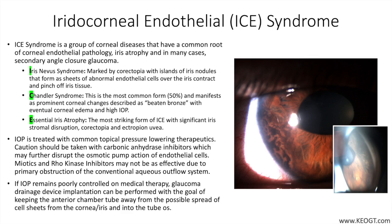ICE syndrome is categorized into three different forms. The first is iris nevus syndrome, or Cogan-Reese syndrome, marked by corectopia with islands of iris nodules that form as sheets of abnormal endothelial cells over the iris contract and pinch off iris tissue.